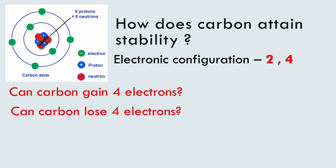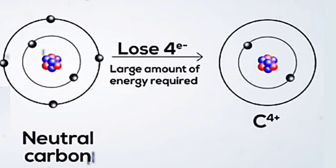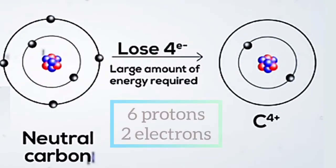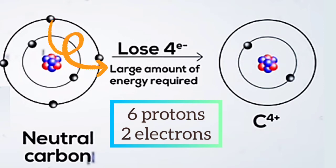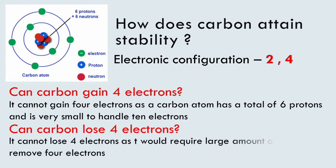Let's check what will happen for each condition. If carbon gains 4 electrons, the neutral carbon converts to a C⁴⁻ anion. But it remains unstable because it will be very difficult for the nucleus of carbon with 6 protons to hold on to 10 electrons. On the other hand, if carbon loses 4 electrons, it converts to a cation with 4 positive charge. But again, it requires a large amount of energy to remove 4 electrons. So, as carbon cannot form an anion or cation, carbon compounds are not ionic in nature.